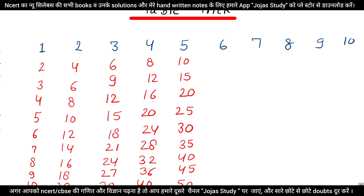Now we will do our 6 table. So we are going to come to our 6 table: 1, 2, 3, 4, 5, 6, 7, 8, 9, 10, 11, 13, 14, 15, 16, 17, 19, 20, 21, 22, 23, 24, 25, 26, 27, 28, 29, 30.